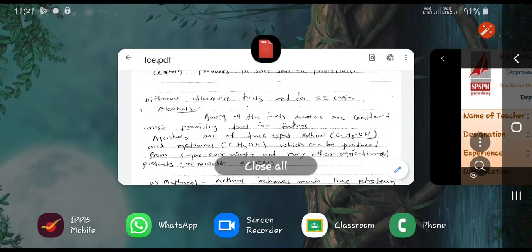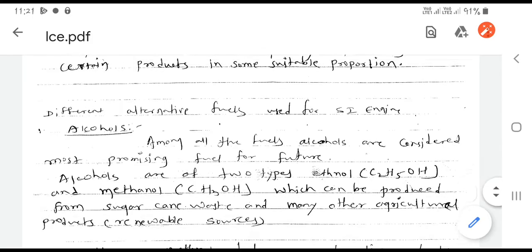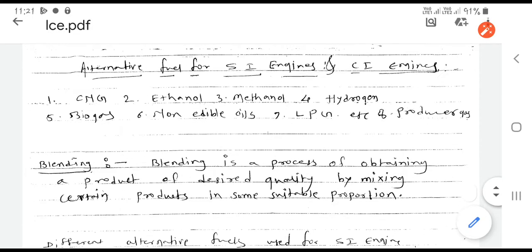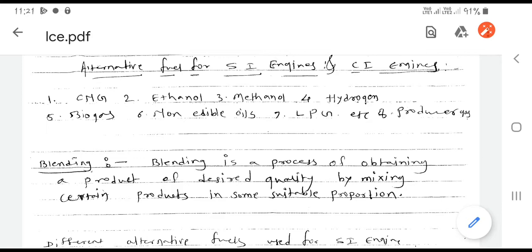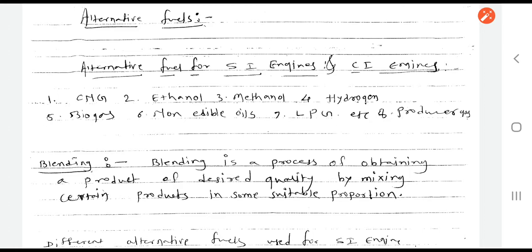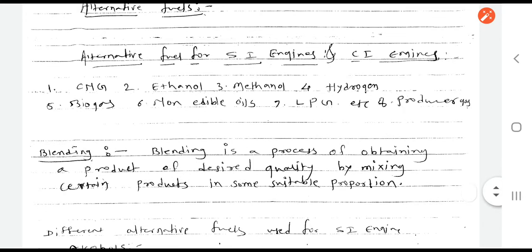In this video, we are going to talk about the next chapter, that is alternative fuels and engine emissions and its control methods. We are going to discuss the different alternative fuels used for SI and CI engines. We know we are using petrol as a fuel for all SI engines and diesel for CI engines. The sources of petrol or diesel are very much limited — they may be finished within 10 to 20 years. So there is a need to find different alternatives to these fuels.